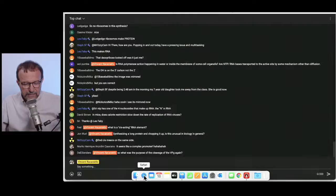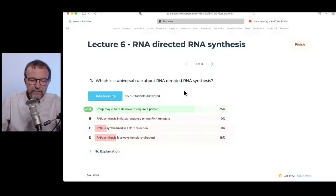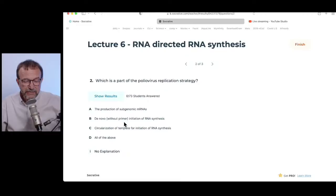Quiz question: which is part of the poliovirus replication strategy? A — production of subgenomic mRNAs; B — de novo without primer initiation of RNA synthesis; C — circularization of template for initiation of RNA synthesis; D — all of the above. The answer is C — circularization of the template for initiation of RNA synthesis. Subgenomic mRNAs are made by alphaviruses, not poliovirus. Poliovirus uses VPG as a primer, not de novo initiation.